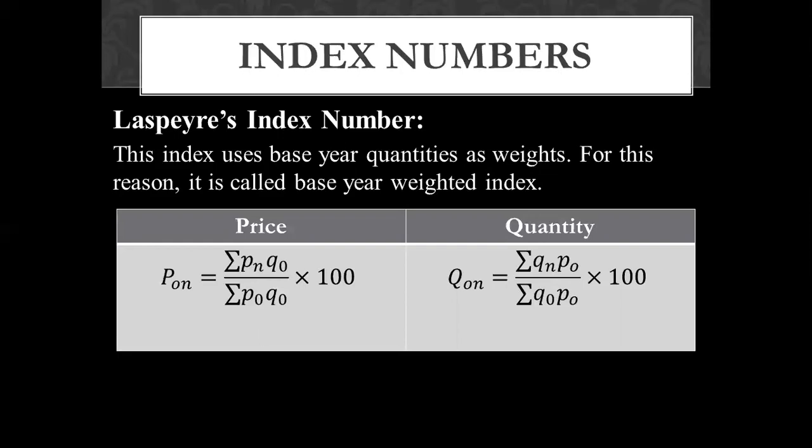Here you have the formula: summation of Pn times Q-naught, divided by summation of P-naught times Q-naught, multiplied by 100. If we multiply the numerator and denominator with the base year quantity, then we will have Laspeyre's index number. The quantity index number is also the same.